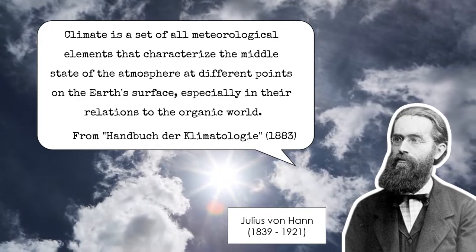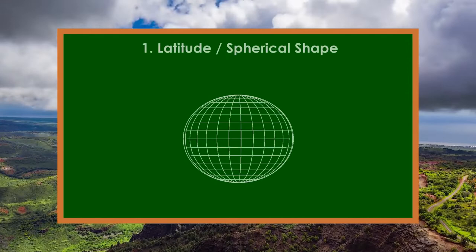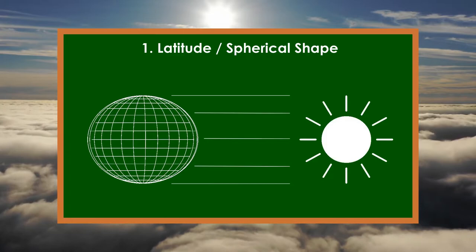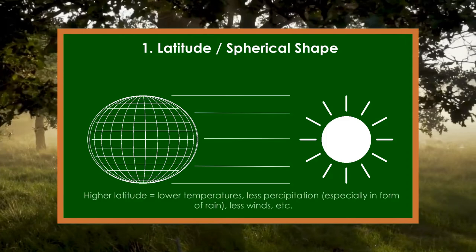The climate of our planet is influenced by various factors. The latitude, or spherical shape of the Earth, has an influence in terms of the distribution of solar radiation, which automatically leads to a different distribution of air temperature and has further effects on other climatic elements like evaporation, precipitation, winds, and so on.